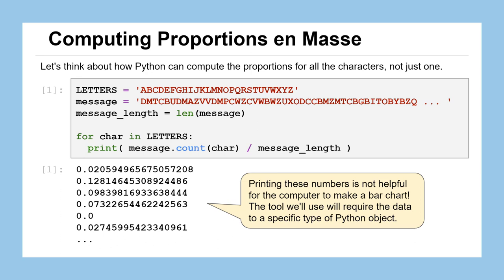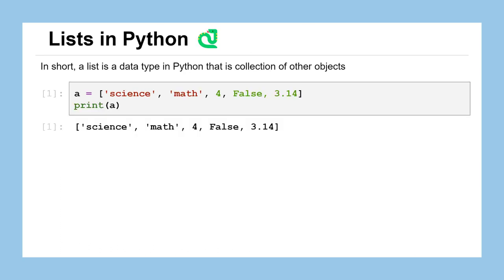We're going to save this somehow so we can pass it off to the code that's actually going to make the bar chart. It turns out the tool or function we're going to be using in Python requires this to be stored not as an integer, or as a float, or as a string, but a new type of data that Python works with called a list. In short, a list is just a data type in Python that can be a collection of all of the other data types — all the other objects we've seen so far.